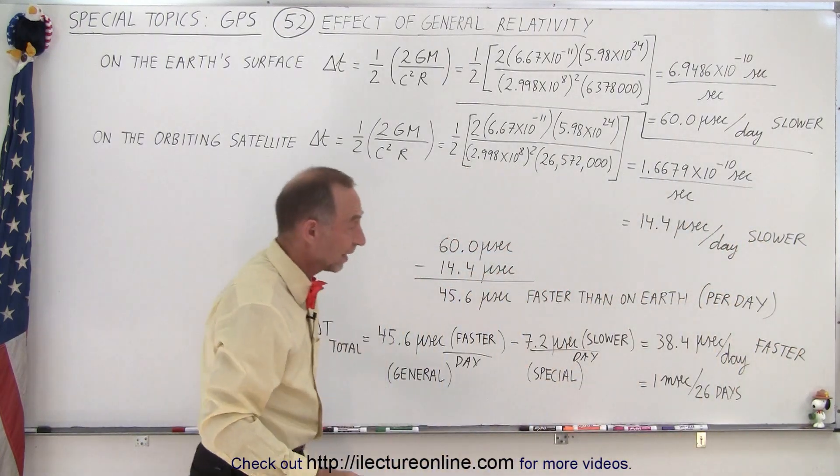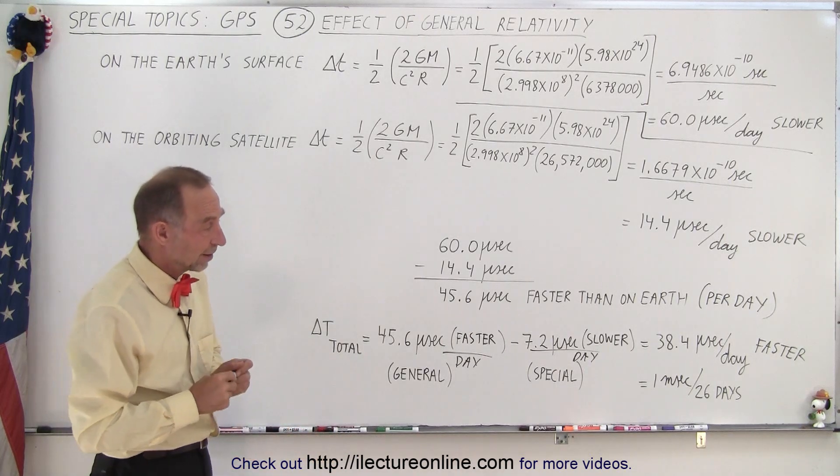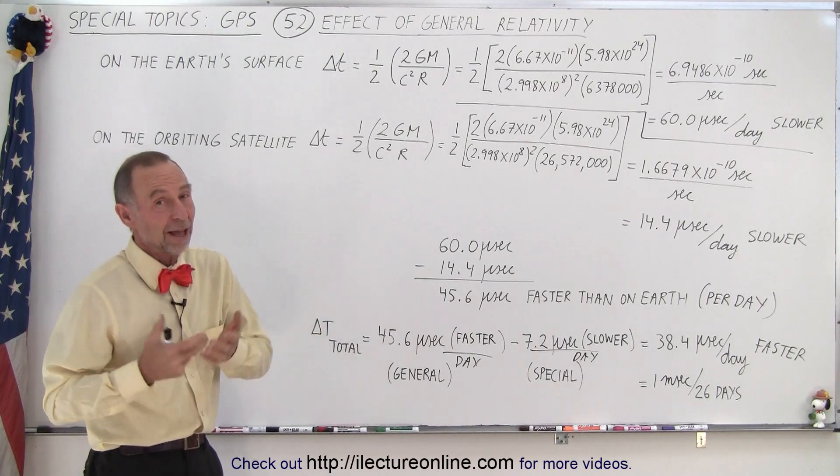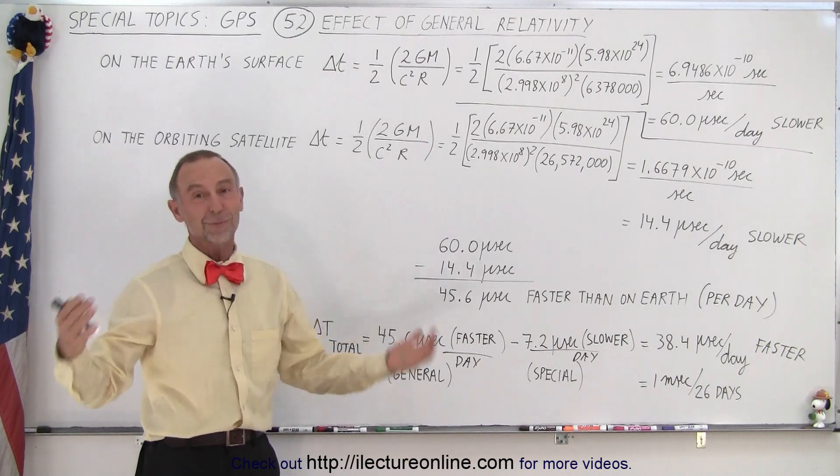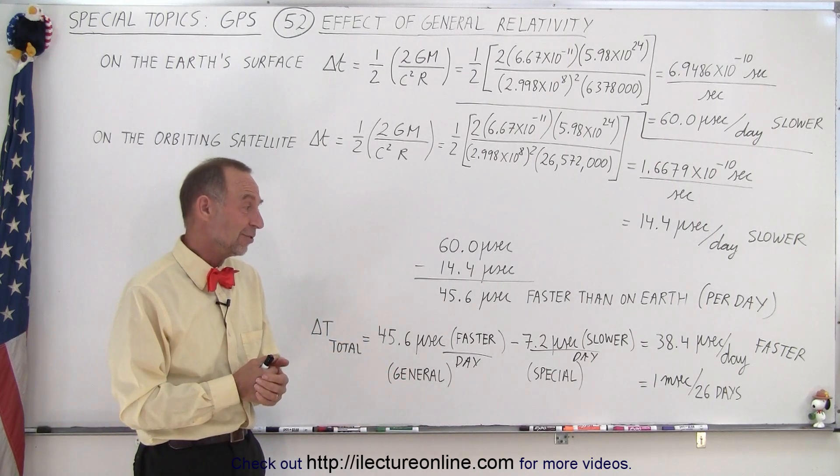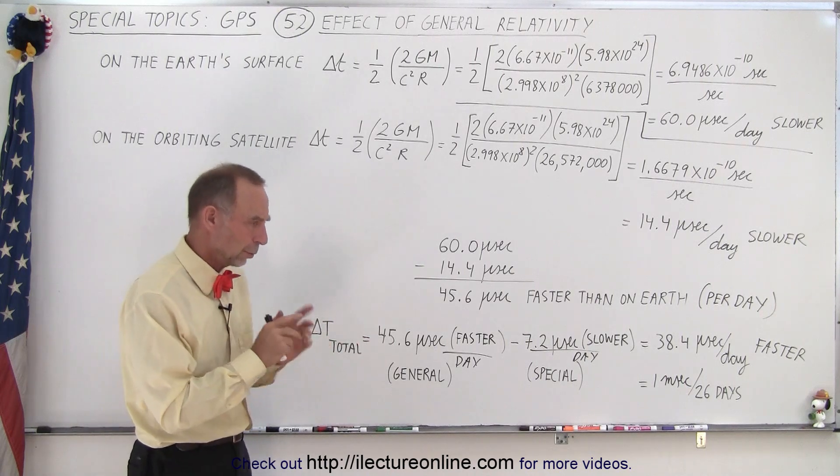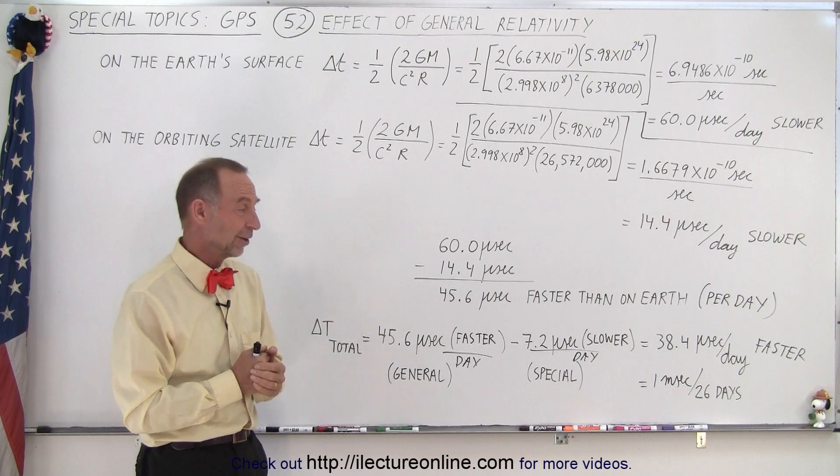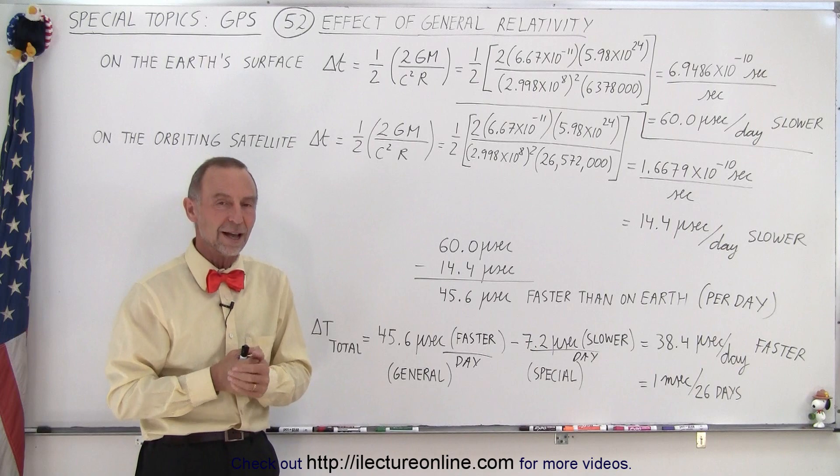And so that means that every 26 days the clocks on the satellites get ahead by 1 millisecond. And by now we realize that 1 millisecond on GPS is a huge amount of time. That means light travels a million feet in one millisecond. A million feet is a lot of miles. So you can be way off in your GPS estimates if you do not compensate for the time.